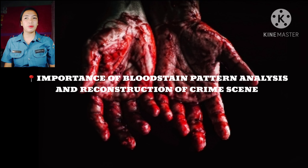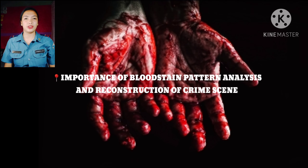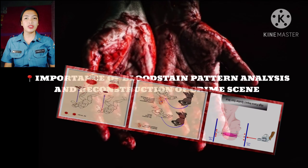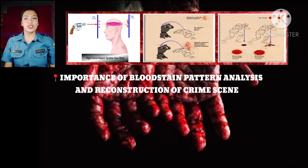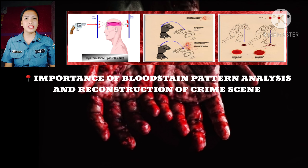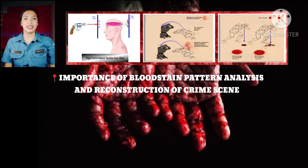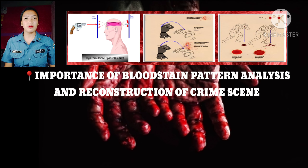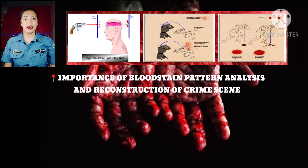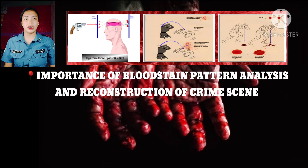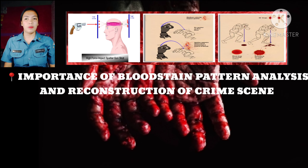What is the importance of bloodstain pattern analysis and reconstruction of crime scenes? The important function of bloodstain pattern analysis is to support or corroborate witness statements and laboratory and post-mortem findings — it supports and verifies what witnesses say and the findings from post-mortem examination.